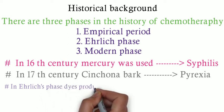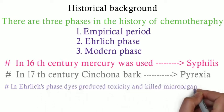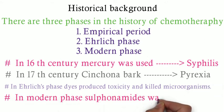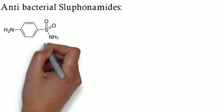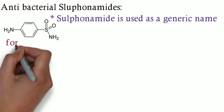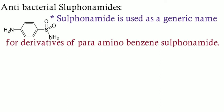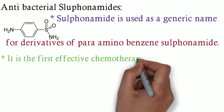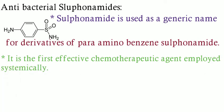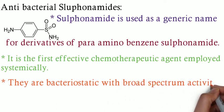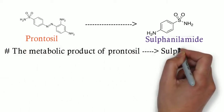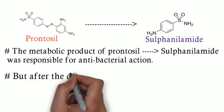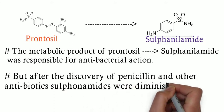In the second phase, some dyes were produced which had toxicity and they killed microorganisms. In the modern phase, sulfonamide was discovered. The sulfonamide has antibacterial activity — it contains a benzene sulfonamide and an amino group, so it is called para-aminobenzene sulfonamide. It is the first effective systemic chemotherapeutic agent. They are bacteriostatic with broad spectrum activity, killing most gram-positive and gram-negative bacteria. The metabolic product of Prontosil, which is sulfonamide, was responsible for the antibacterial action. However, soon after the discovery of penicillin and other antibiotics, sulfonamides were diminished in use.